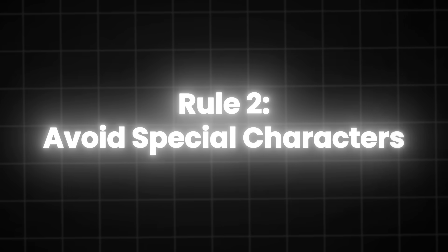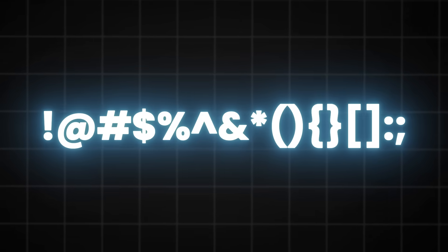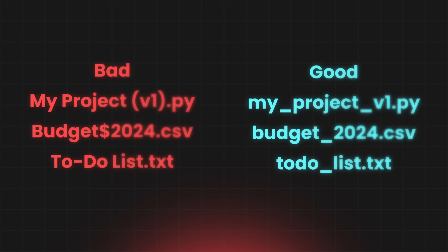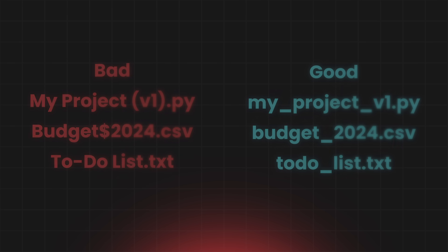Rule two: avoid special characters. In general, letters A to Z, numbers zero to nine, and the underscore are the safest characters. Hyphens are usually safe too, but avoid special characters like exclamation points, dollar signs, and things like that — they are risky to use. Depending on the tools and software you're using, those special characters may cause problems. Here are some bad examples, and here are some better examples. I avoid special characters at all costs, except in the rare cases where an application specifically requires them.